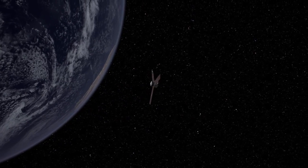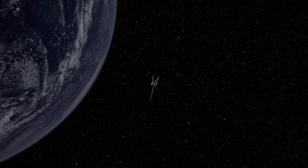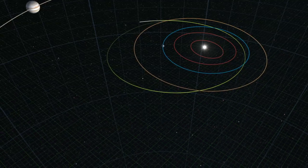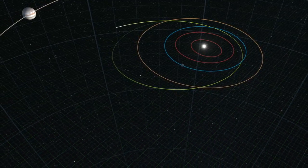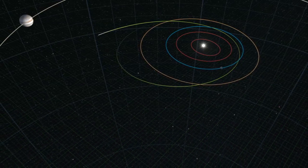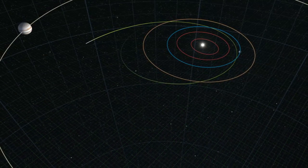Using Earth's gravity for energy, Juno slingshots into space, increasing its speed and receiving the boost it needs to pull away from the Sun and coast all the way to Jupiter.